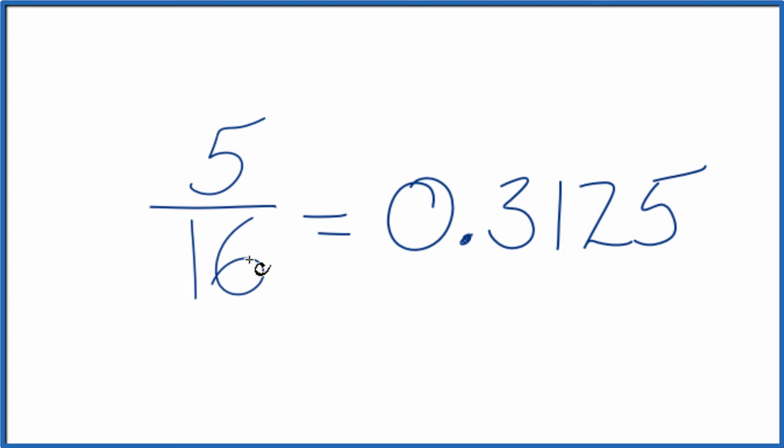So the fraction 5 over 16th, that equals the decimal 0.3125. If you multiply this by 16 you get 5.